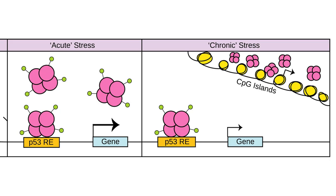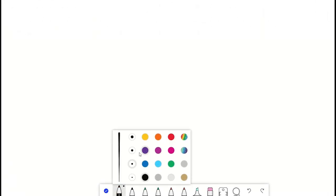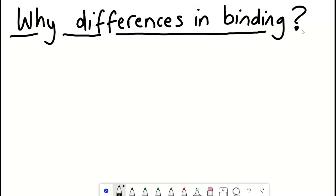We refer to p53 here as chronic, to distinguish it from the canonical acute response. We just don't have the complete picture yet. But part of the reason we see differential binding of p53 in chronic and acute phases could be due to the changes in the accessibility of DNA.